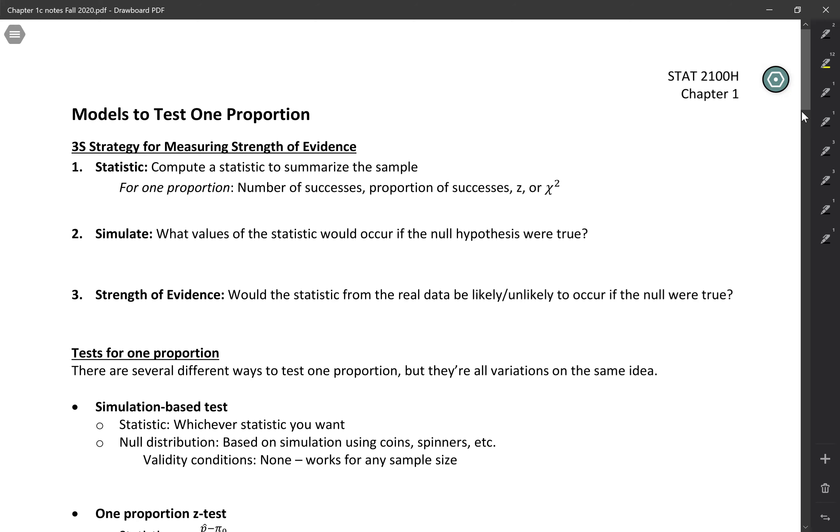The second step is to simulate, and the purpose of this is to figure out what values of that statistic would occur if the null hypothesis were actually true. So this is kind of a what-if question. What if the null were true? What values would I expect to get? In the 3S strategy, it's specifically talking about simulating to see those values.